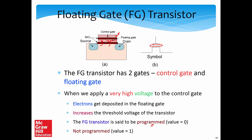When a transistor is programmed, it holds a logical zero; when it is not programmed, it holds a logical one. Initially we start with a logical one (no electrons in the floating gate), and we make a transition to zero when it is programmed. Programming is done by applying a very high positive voltage between the gate and the substrate, causing electrons to migrate and deposit themselves in the floating gate, significantly increasing the threshold voltage.